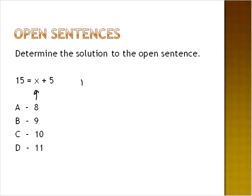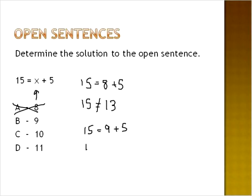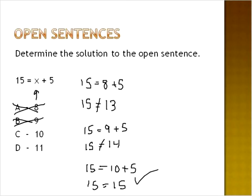Fifteen is equal to eight plus five — fifteen is equal to thirteen. That's not true, so A is not the correct answer. Fifteen is equal to nine plus five — fifteen is equal to fourteen. That's also not true, so nine is not correct. Fifteen is equal to ten plus five — fifteen equals fifteen. That one is correct, so our solution is C.